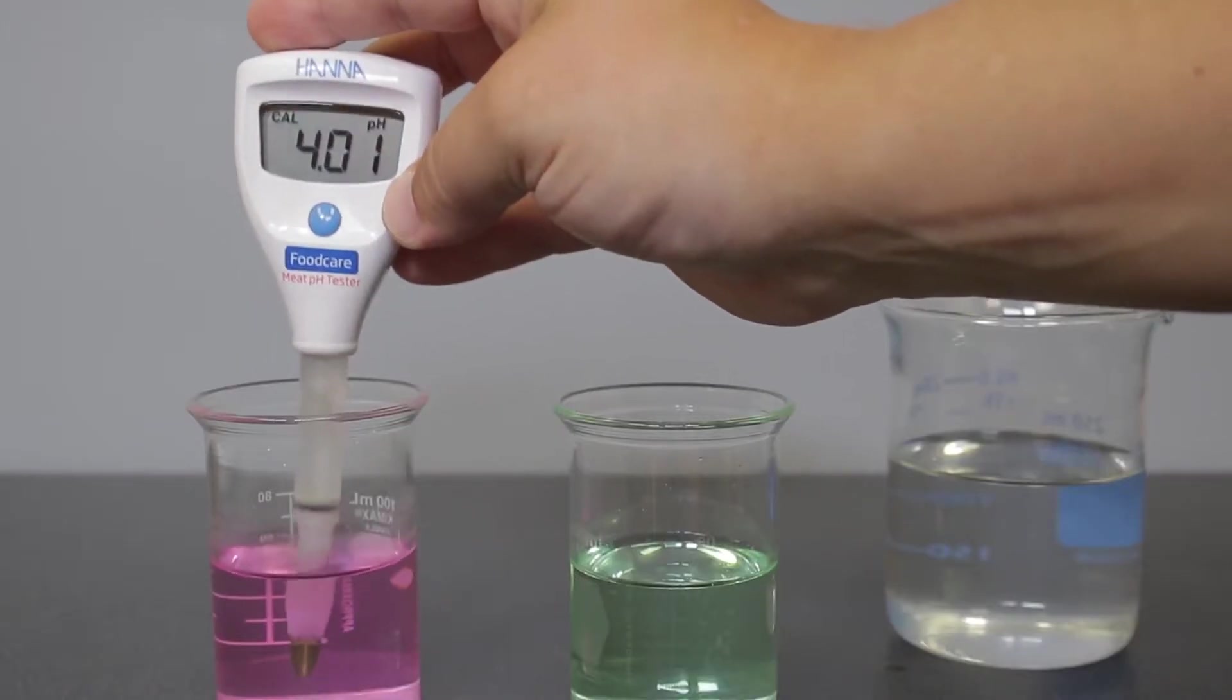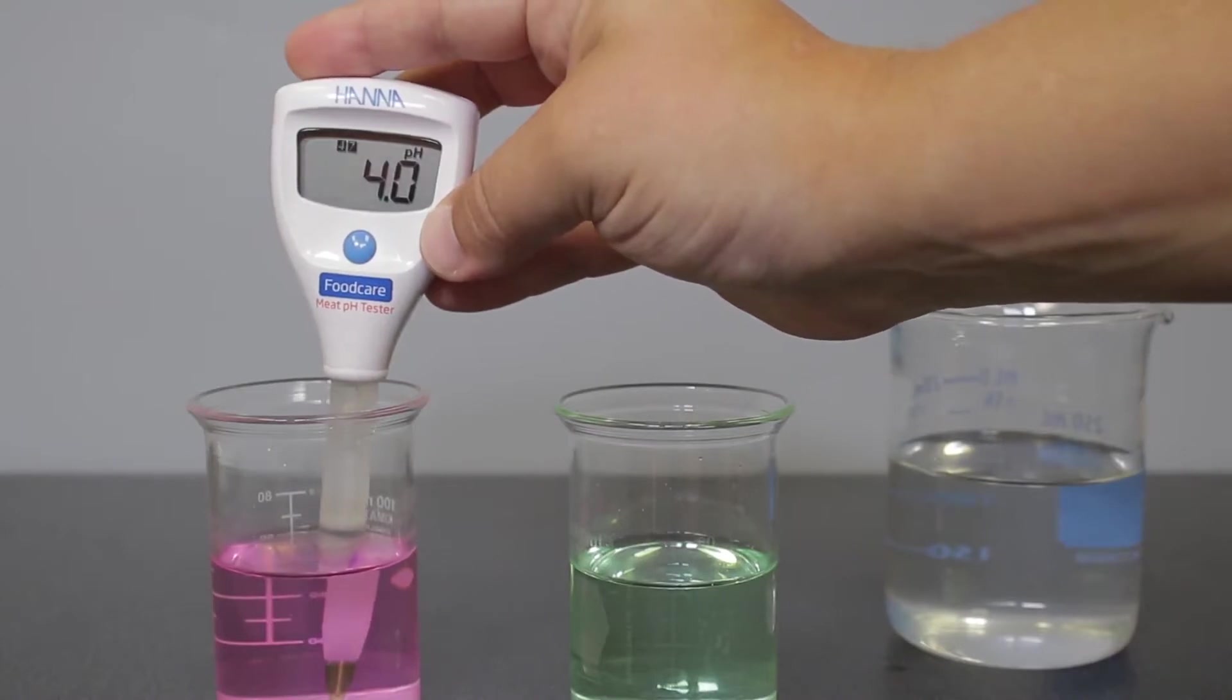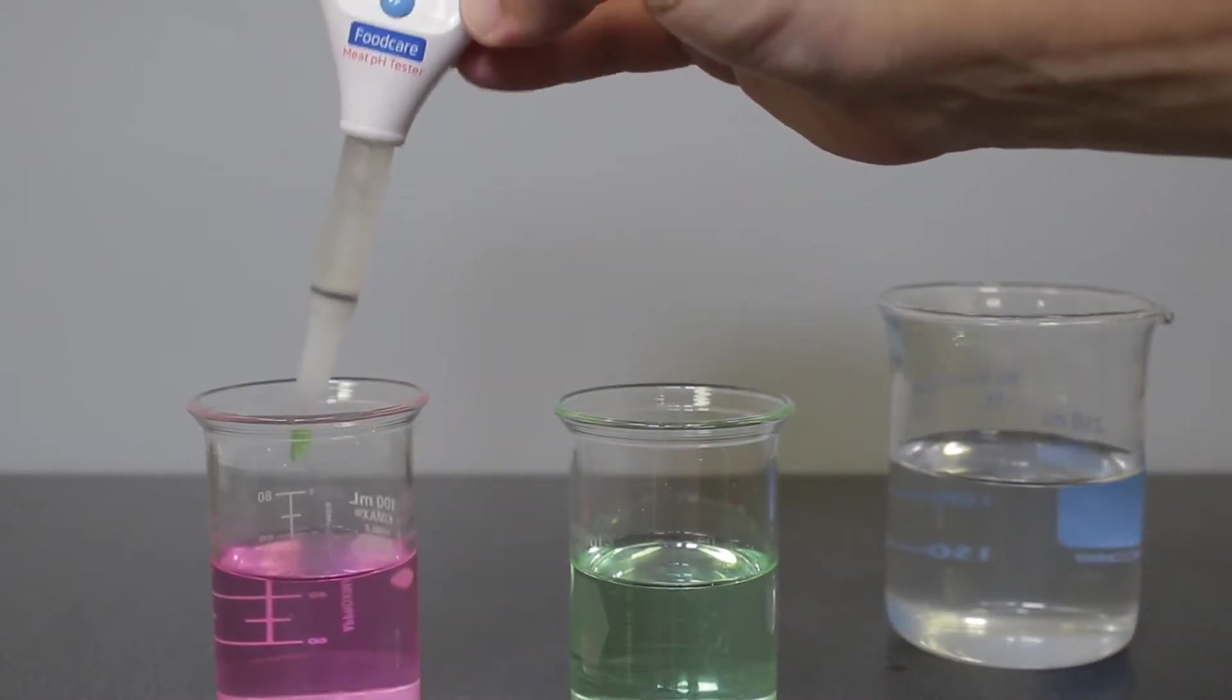Once the second calibration point is stable, store will appear on the screen confirming that the two points are recorded and it will return to the measurement mode.